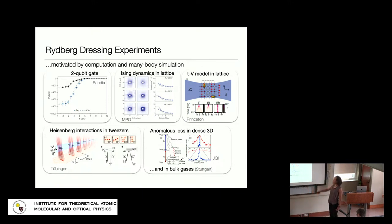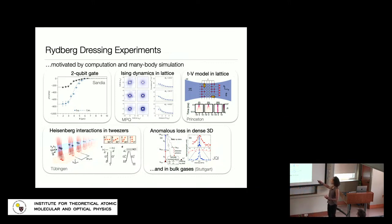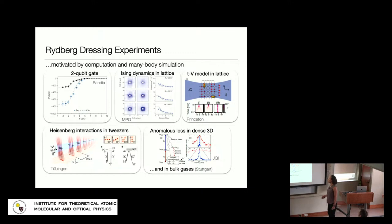These experiments were often motivated by applications in computation or many-body simulation. There was a landmark demonstration of a two-qubit gate at Sandia, studies of the dynamics of Ising interactions induced by Rydberg dressing in 2D lattices, work at Princeton combining dressed interactions with a fermionic Hubbard model to have hopping plus longer-range interactions, and in the Gross group in Tübingen, work on generating designer Heisenberg interactions by engineering flip-flop and flip-flip processes using Rydberg dressing.